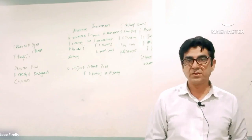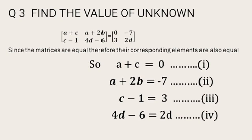Now the very last question of this exercise, in which there are 2 equal matrices given, and we have to find the unknown elements a, b, c, and d. First of all, we should know that if matrices are equal, then their corresponding elements are also equal.